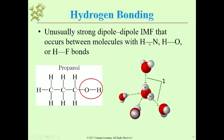In order for hydrogen bonding to occur, remember it's an extreme form of dipole-dipole. The most electronegative atoms of the appropriate size on the periodic table — nitrogen, oxygen, and fluorine — are the only ones where the polarity of the bond between hydrogen and those atoms is great enough, polar enough, for hydrogen to almost be H+, not quite. But it makes that bonding super strong.